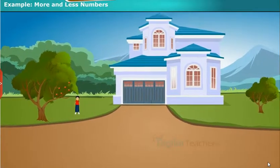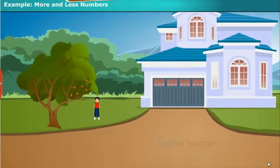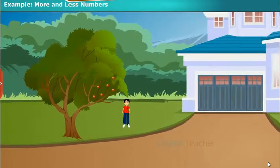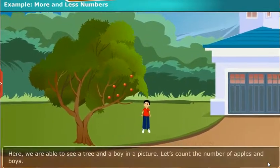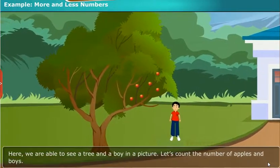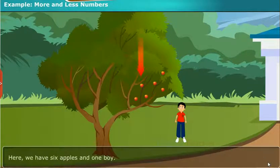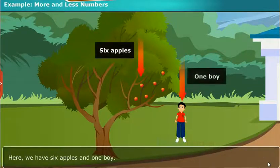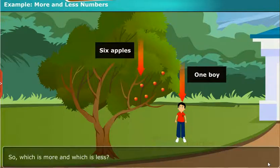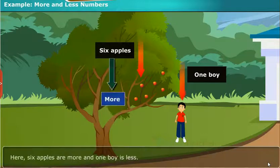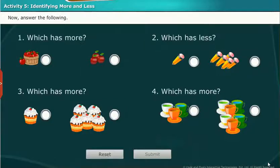Dear children, let us take an example to understand the concept of more and less numbers. Here we are able to see a tree and a boy in a picture. Let's count the number of apples and boys. Here we have 6 apples and 1 boy. So which is more and which is less? Here 6 apples are more and 1 boy is less. Do you observe the differences between more and less? Now answer the following.